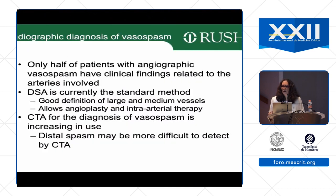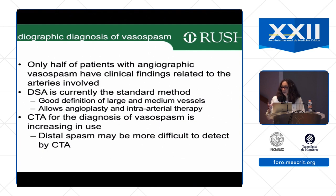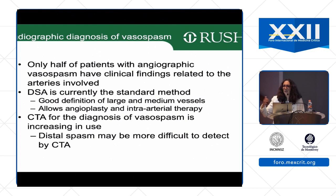Quantitative EEG monitoring is not routine everywhere because it requires specialized electrographers and technology. But if you have that capability it is excellent — even visually, you can see alpha changing to delta. Regarding radiographic diagnosis of vasospasm, remember that only half of patients with angiographic vasospasm actually have clinical findings.